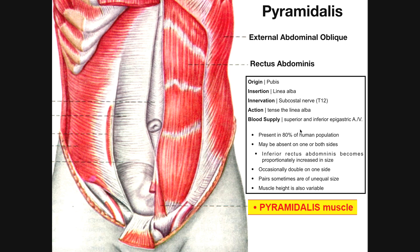Its blood supply comes from the superior and inferior epigastric arteries and veins, although the major blood supply is the inferior epigastric artery. In terms of its relative orientation, it's actually going to lie anterior — or superficial — to the rectus abdominis. So it's not behind it; it's actually in front of the rectus abdominis muscle.